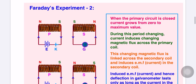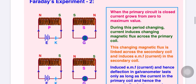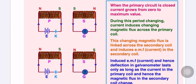Now Faraday's Experiment 2: the construction has a coil connected with a galvanometer, and another coil connected with a battery through a switch (key). When the primary circuit is closed, current grows from zero to maximum value. As current suddenly increases, the adjacent coil connected to the galvanometer experiences flux changes. During this period, the changing magnetic flux across the primary coil links across the secondary coil and induces an EMF in the secondary coil.